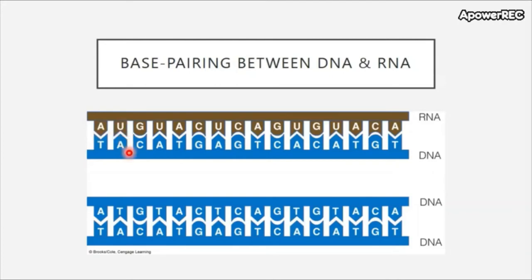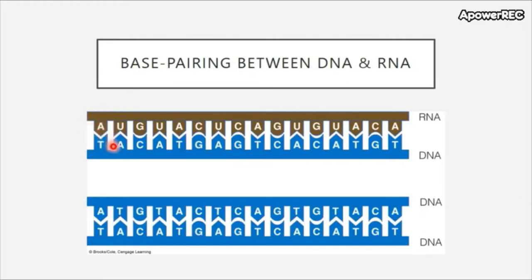Some students get confused when they see a T in a DNA template and try writing a U as its complement. Remember that T's don't get replaced by U's — they are replaced by U's only in the RNA product. So T in the template still gives rise to an A in RNA (not a U), and that A would then bind to a U. T creates an A; A would bind to a U.